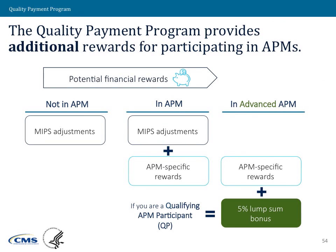This is a summary of the incentives we talked about, shown side by side. Starting from the left, if you're not in an APM and you meet the criteria to be part of MIPS, then you'll receive those MIPS adjustments but nothing in addition to that. If you're in an APM that is not an advanced APM, you're still subject to the MIPS reporting requirements and payment adjustments, but you also get whatever is inherent to those APMs — their own risk and reward structures, which do not change under the Quality Payment Program. There are also specific favorable scoring elements under MIPS for APM participants.